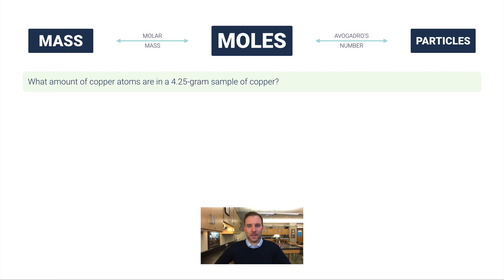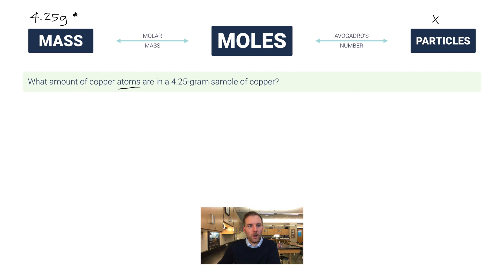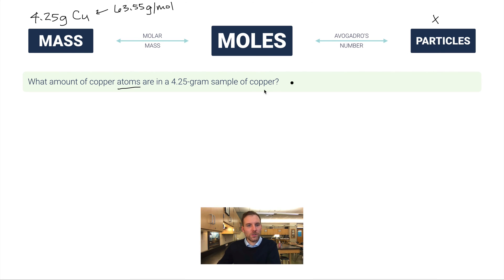Final problem — this one uses the entire map. What amount of copper atoms are in a 4.25 gram sample of copper? We're given mass and want particles (atoms). We'll go: mass → moles using molar mass → particles using Avogadro's number. Copper's molar mass is 63.55 grams per mole from the periodic table. We'll use two conversion factors.